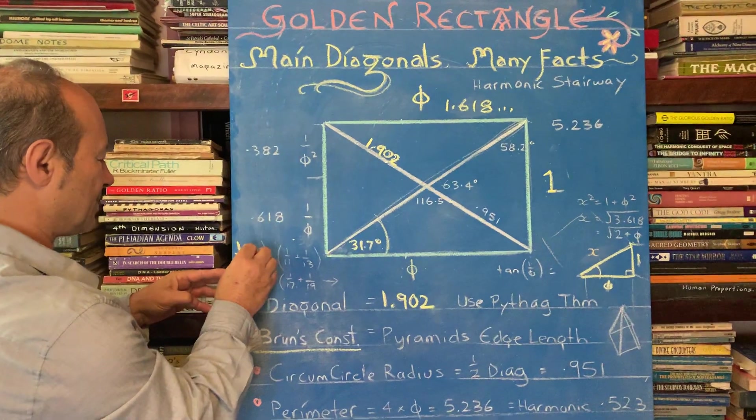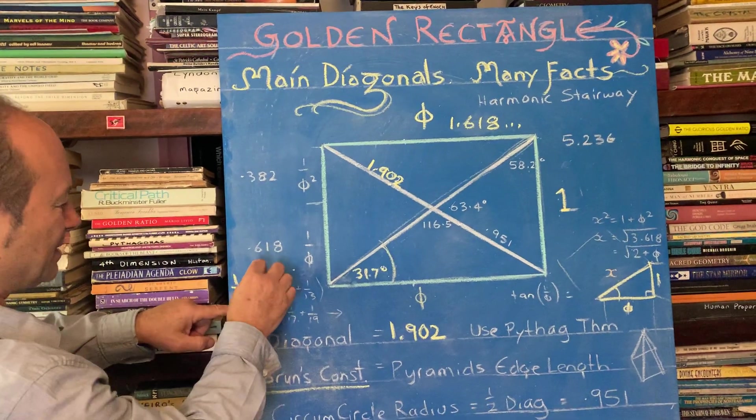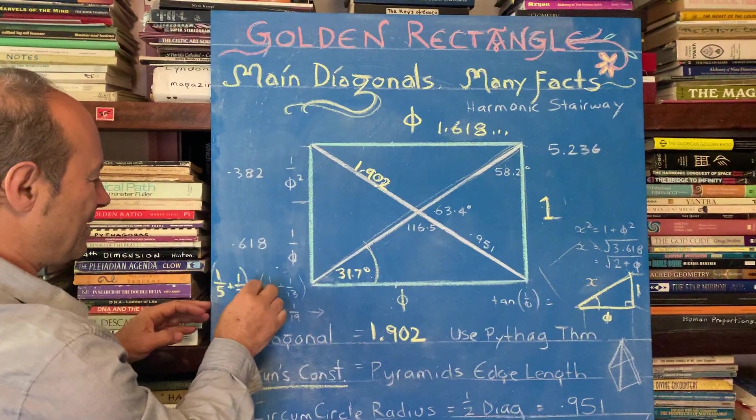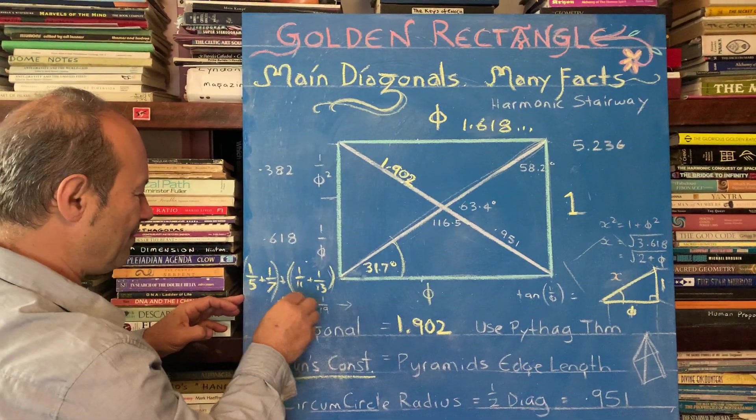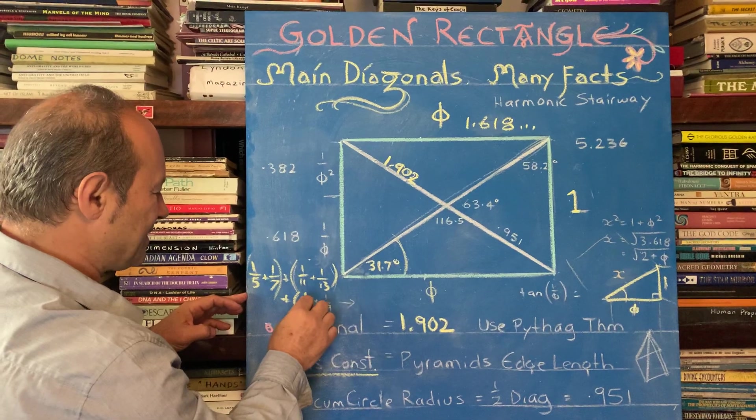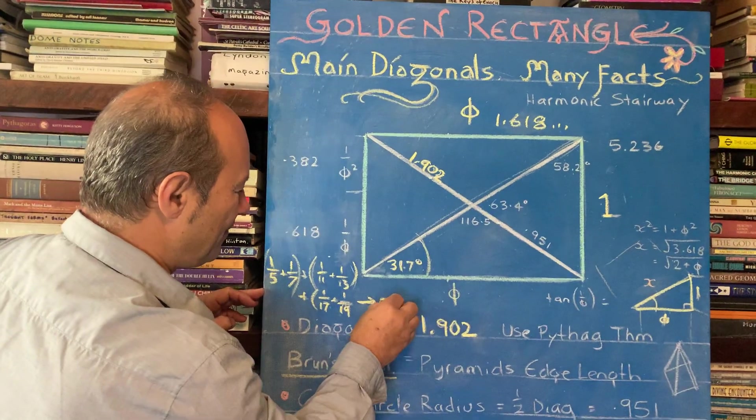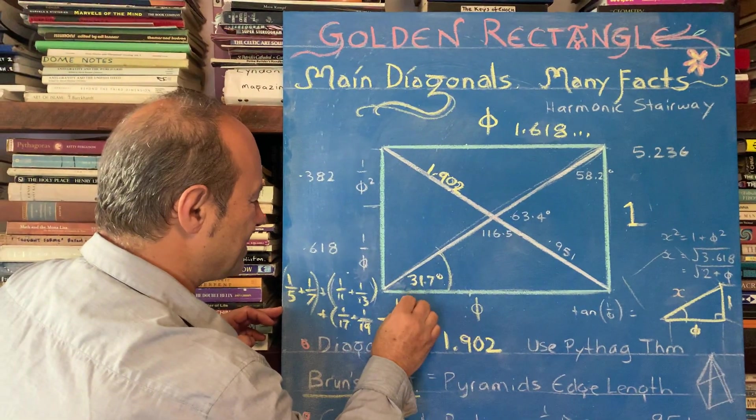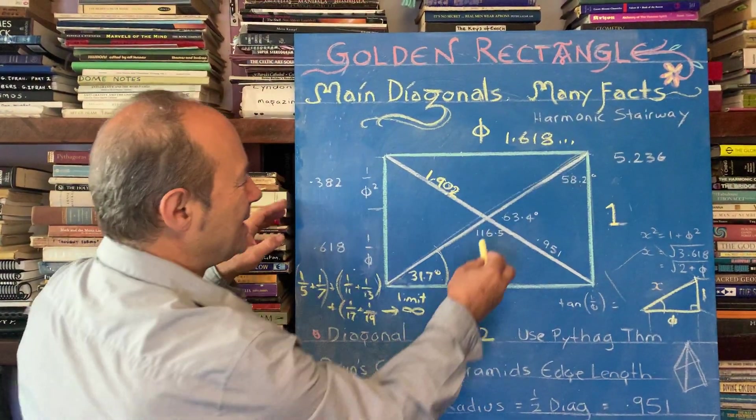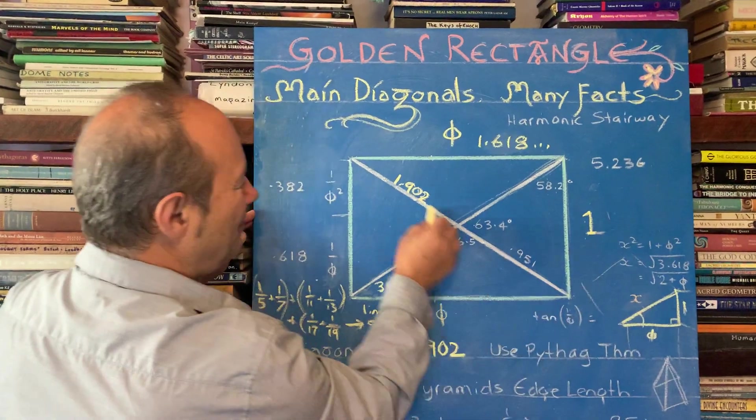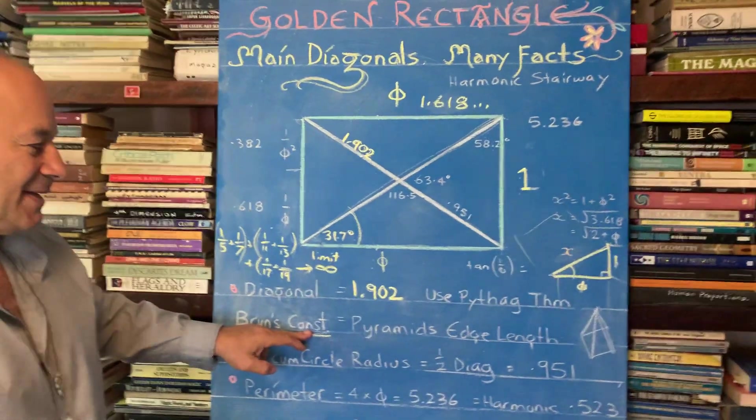So Brun took, he said, I'm going to add up all the numbers in the universe in pairs of 1 on 5 plus 1 on 7. They're fractions. And then the next twin primes are 1 on 11 and 1 on 13. And he keeps adding them, 1 on 17 plus 1 on 19. He keeps adding it forever. It's called the limit. So when you take the limit of all these reciprocals of twin primes, you get 1.9. So it's interesting that the main diagonal of the golden rectangle is also a famous constant. A constant is something that is forever.